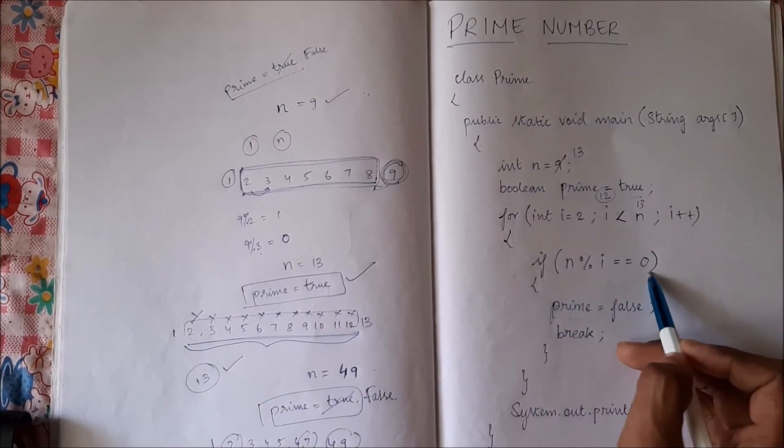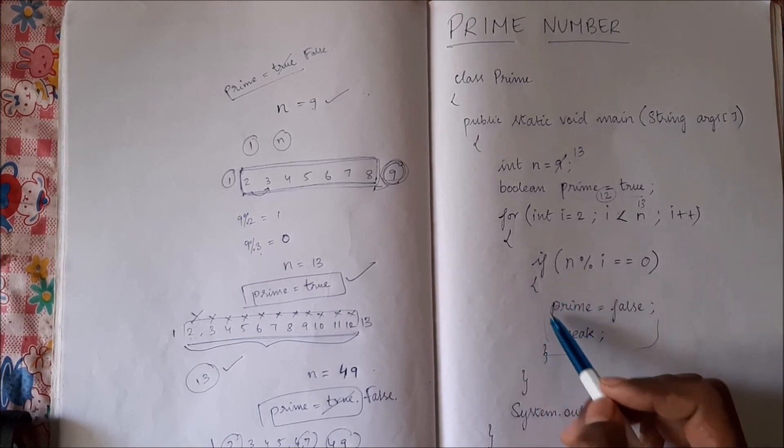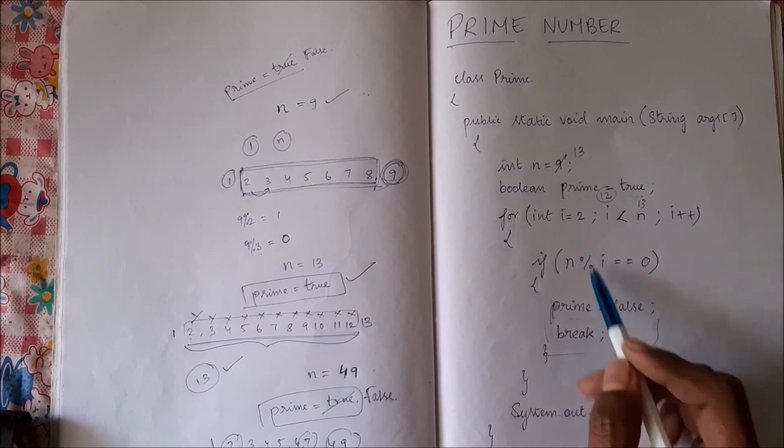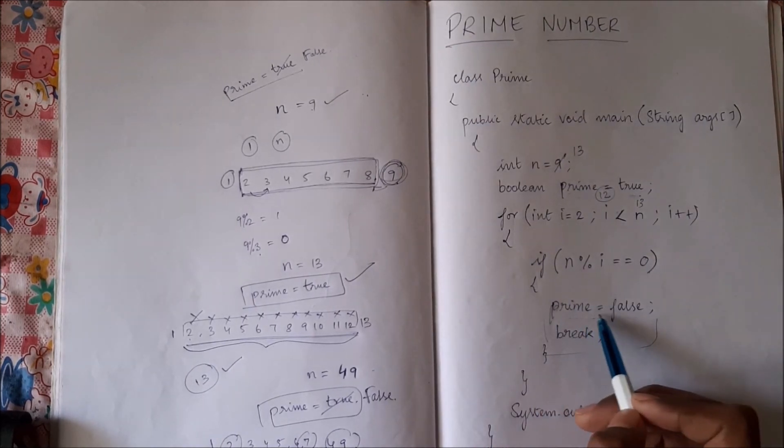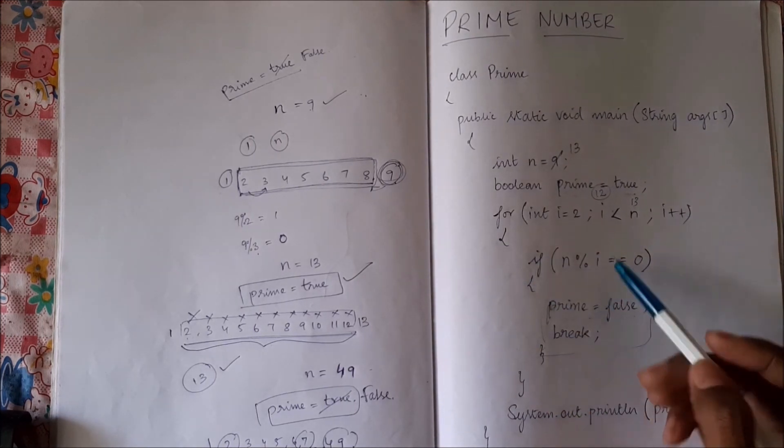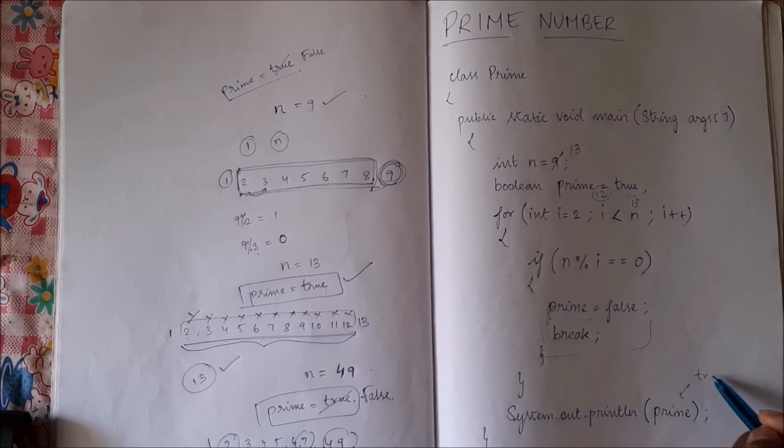So we will check if 13 is divisible by all these numbers. It is never divisible, so it will never go into this if statement. Since it never enters this if statement, this prime equal to true remains as it is. It never becomes false. So this loop runs from 2 to 12, comes out, and it will print true.